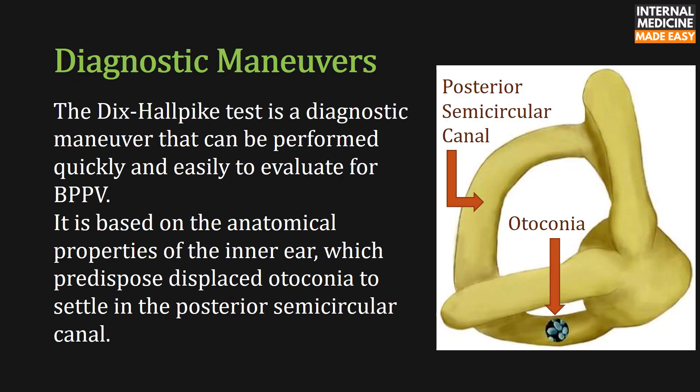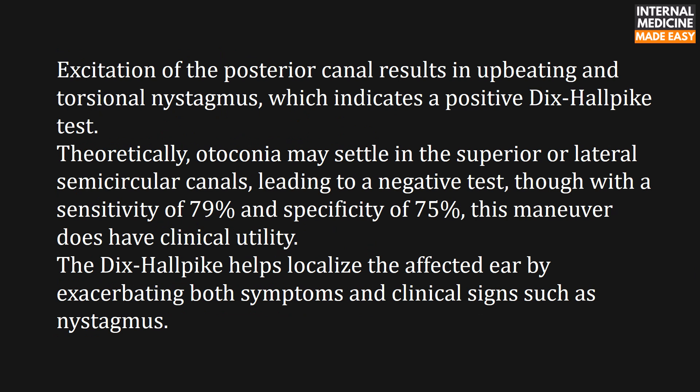The Dix-Hallpike test is a diagnostic maneuver that can be performed quickly and easily to evaluate for benign paroxysmal positional vertigo. It is based on the anatomical properties of the inner ear, which predispose displaced otoconia to settle in the posterior semicircular canal. Excitation of the posterior canal results in upbeating and torsional nystagmus, indicating a positive Dix-Hallpike test. Theoretically, otoconia may settle in the superior or lateral semicircular canals, leading to a negative test, though with a sensitivity of 79% and specificity of 75%, this maneuver has significant clinical utility. The Dix-Hallpike helps localize the affected ear by exacerbating both symptoms and clinical signs such as nystagmus.